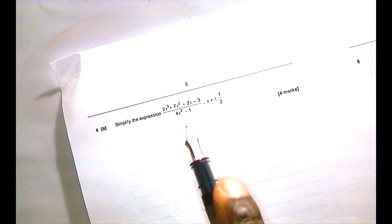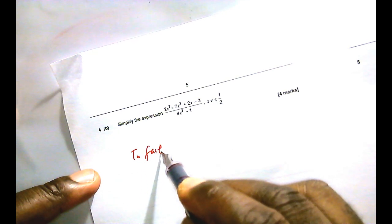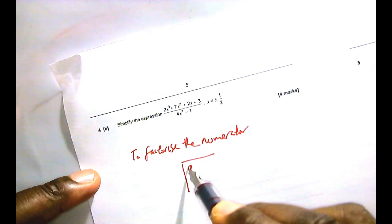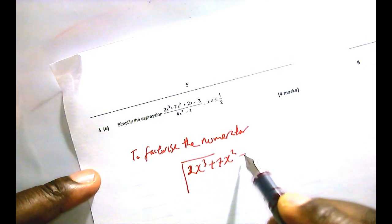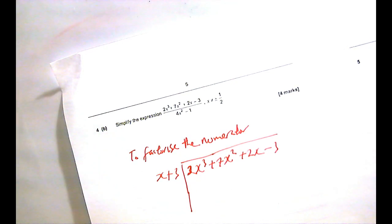The next question is question 4b, which takes on from the one we've just answered. It says simplify the expression — it's an algebraic fraction that we have to simplify. When you are told to do something like that, you want to factorize the numerator and the denominator. To factorize a cubic polynomial, you need to have known one of the factors — and good for us, we now know one. So to factorize the numerator, we will use long division: 2x cubed plus 7x squared plus 2x minus 3, divided by x plus 3.